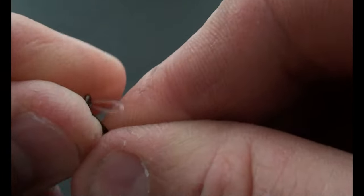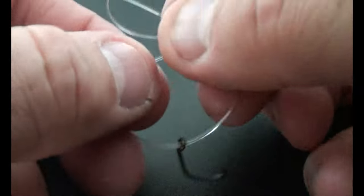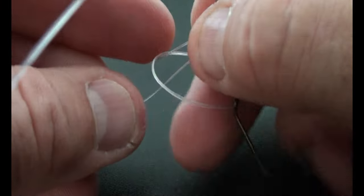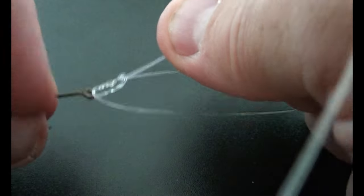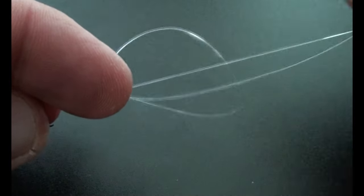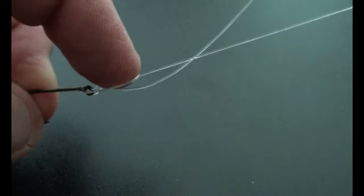So the first thing we're going to do is tie on the first hook, and you can do this using your favorite knot for terminating a line to a hook. I prefer using Palomar knots. They're quick and they're very strong, but feel free to use whichever knot you feel the most comfortable with.